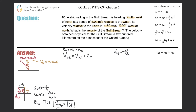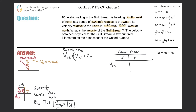Let's create our component table. The velocity of the water relative to the ship added component-by-component to the velocity of the ship relative to the earth gives us the resultant: the velocity of the water relative to the earth. The x-direction value for the water relative to the ship is 1.69, so that goes into the table.